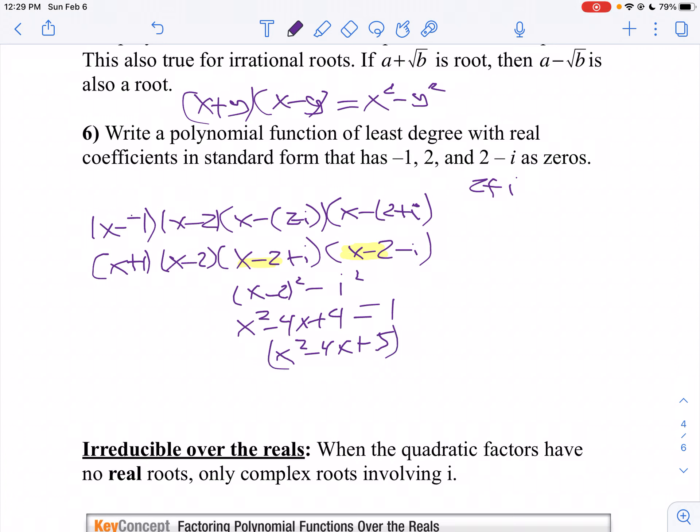Then I can multiply that. If I take (x plus one) times (x minus two), I'll get x squared minus x minus 2. So I'm going to multiply (x squared minus x minus 2) by (x squared minus 4x plus 5).